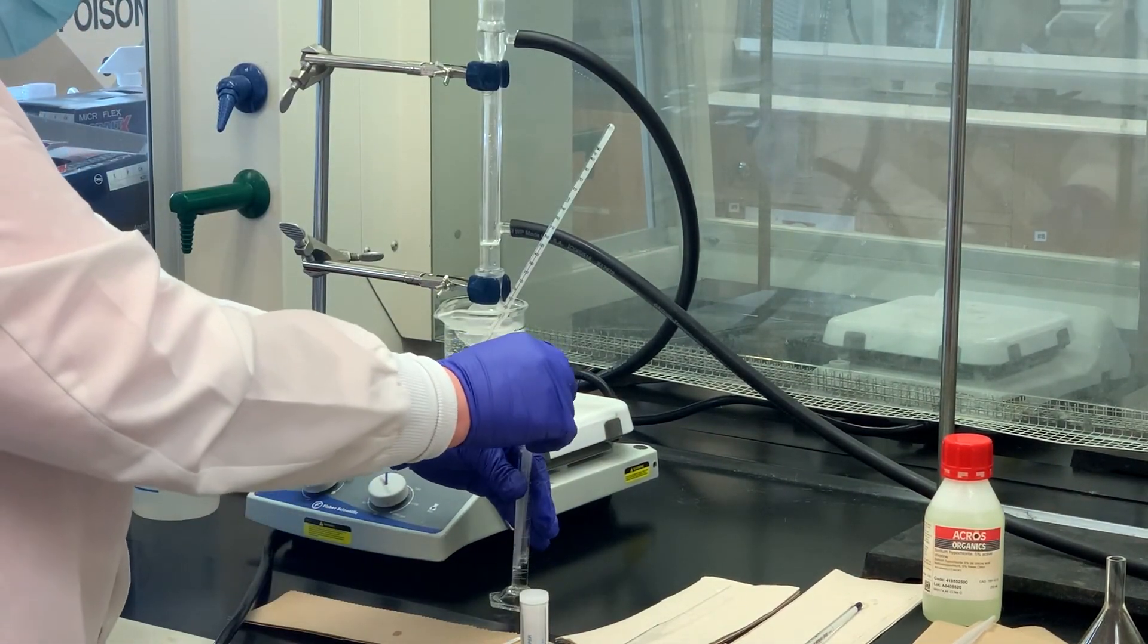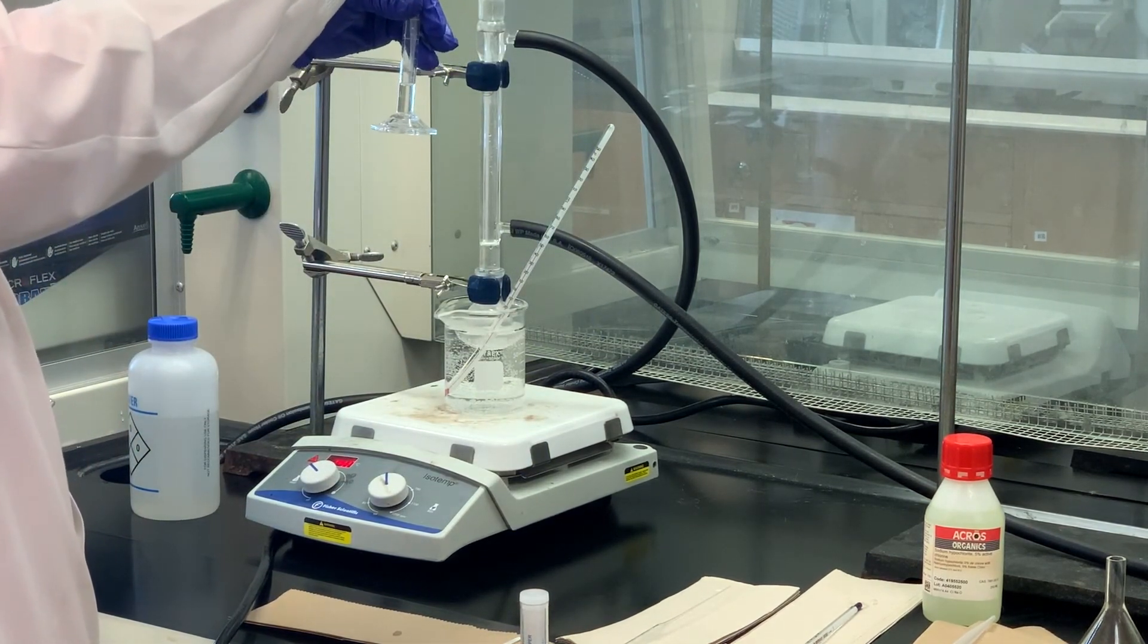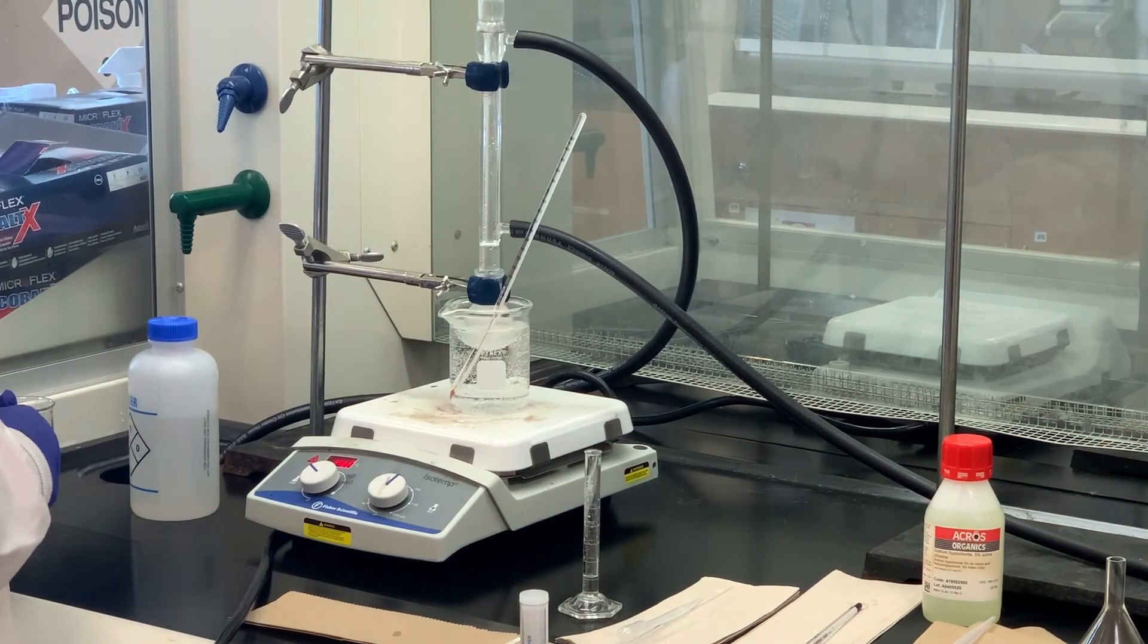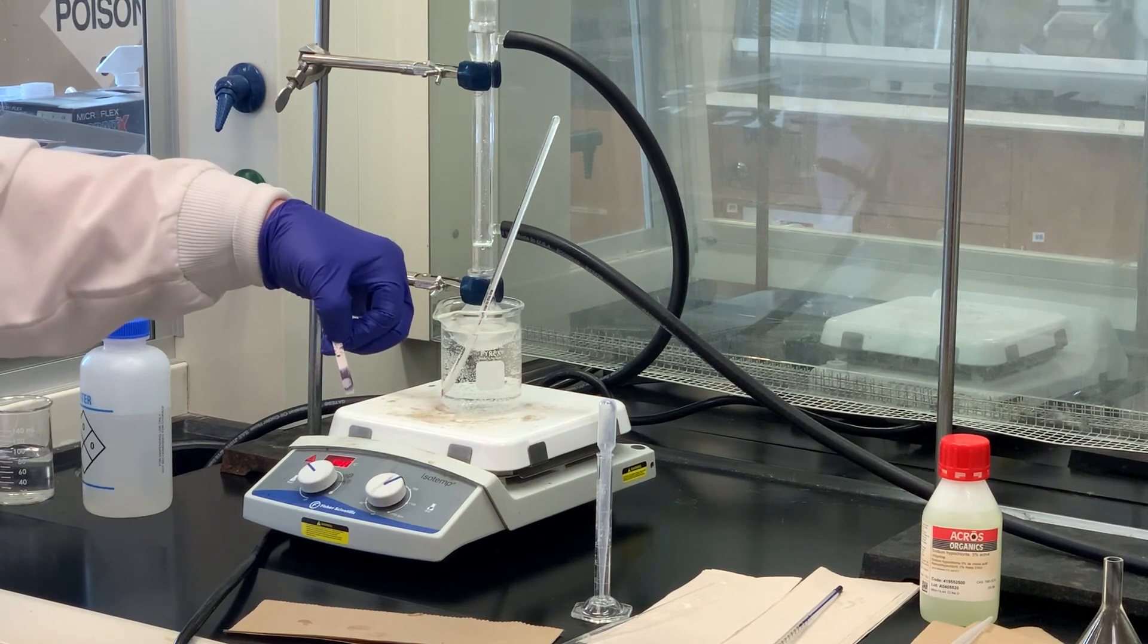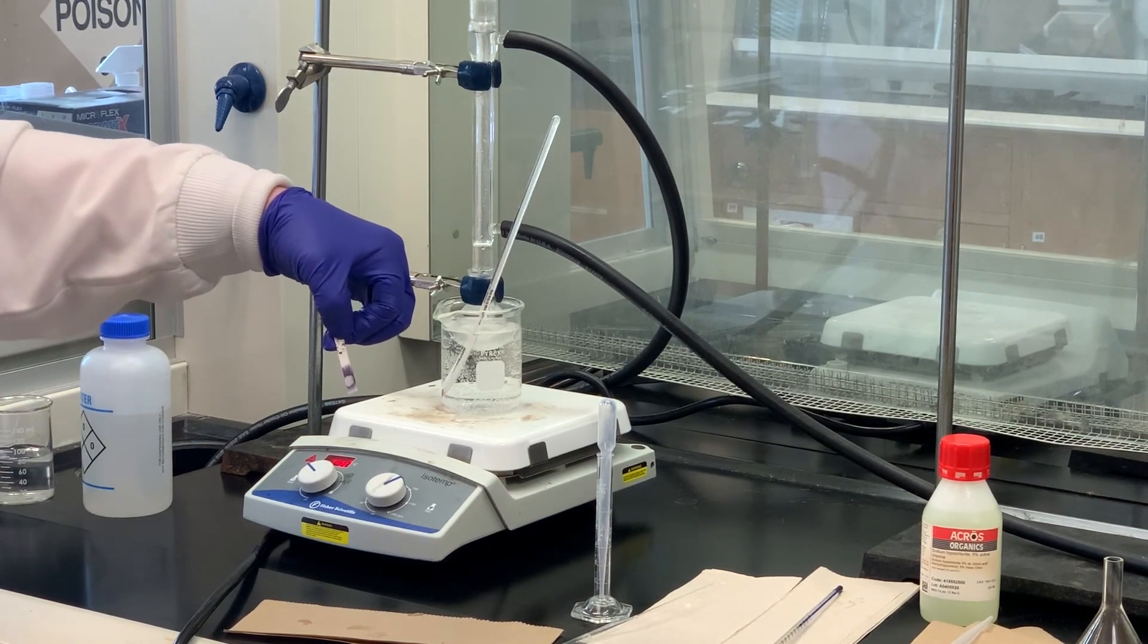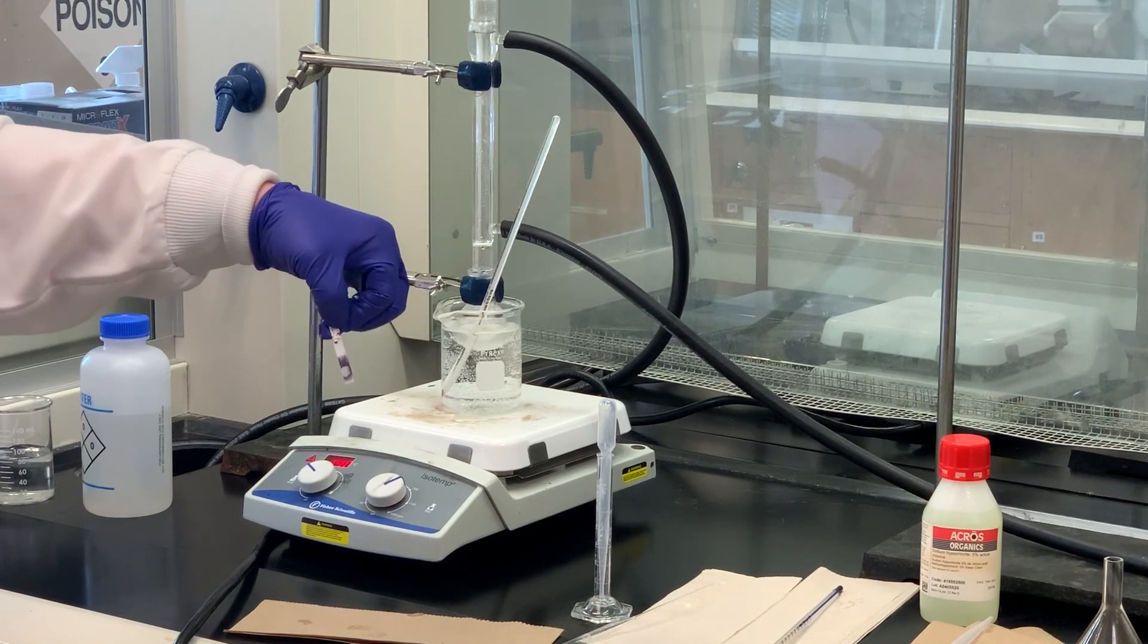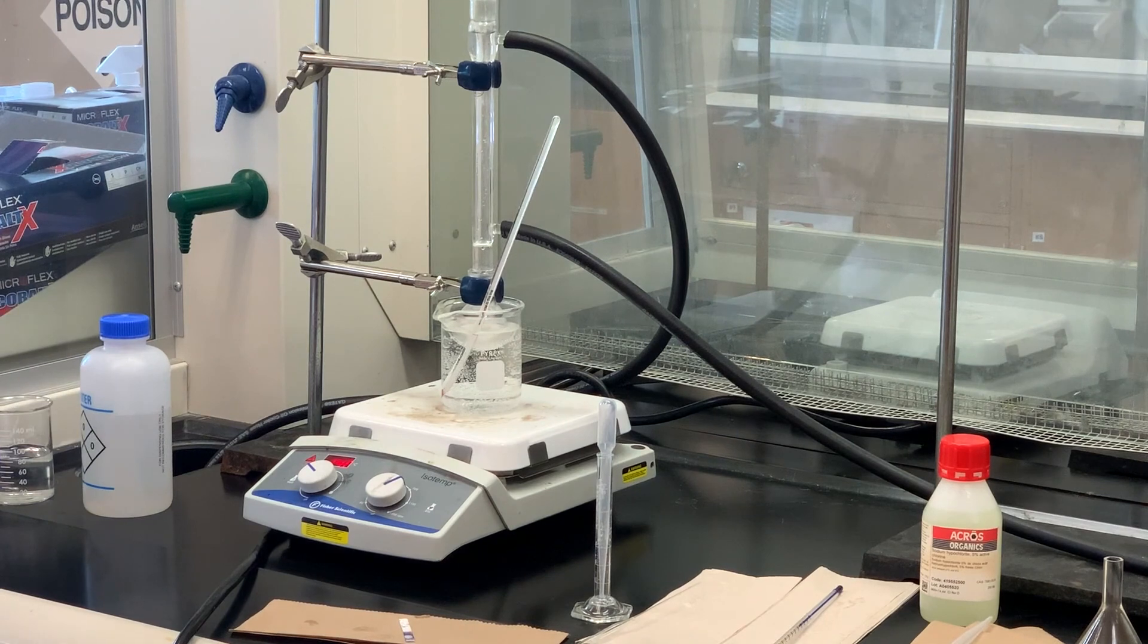Still not a positive test, so I'm going to add another 0.4. And this is after we had to add three different additions of the bleach, but now you can see we got the blue-black response on the starch iodide paper. So now what we're going to do is let that heat another 10 minutes, and then after that we'll let it cool and we'll go through the extraction process.